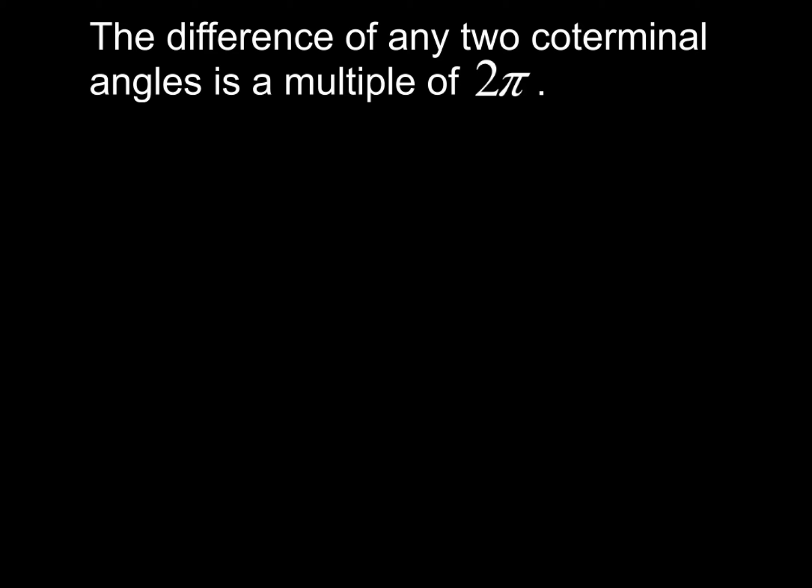Now what we've got to realize here is that the difference between any two coterminal angles is always going to be a multiple of 2π. Now, that could be plus or minus 2π, but that could be plus or minus 4π, or plus or minus 6π, or even plus or minus 8π, and so on. You get the idea. So let's go back to those answers that we had previously.